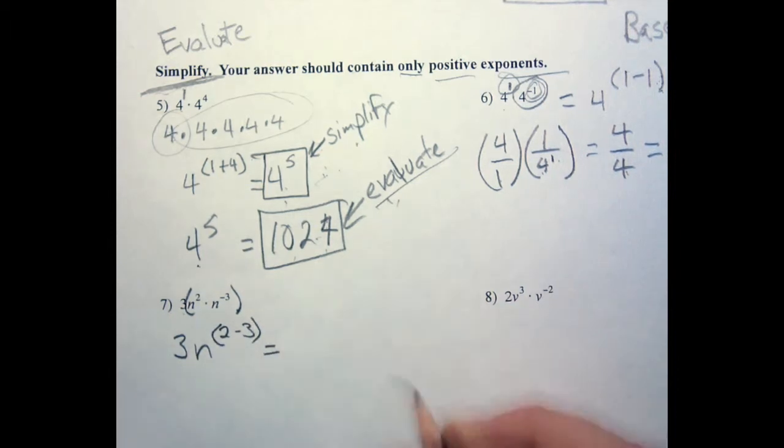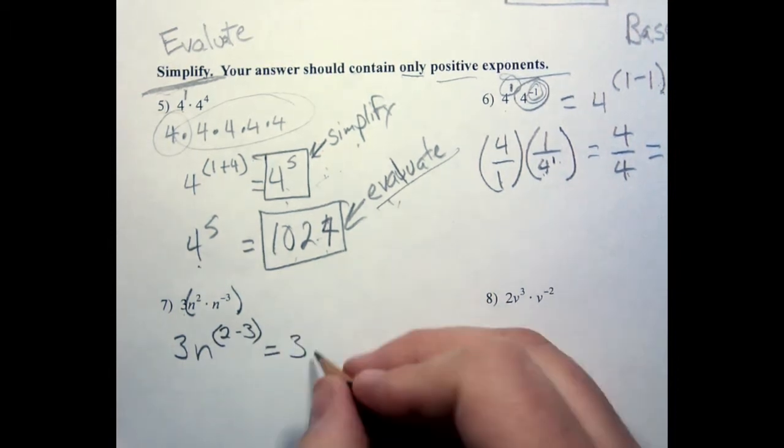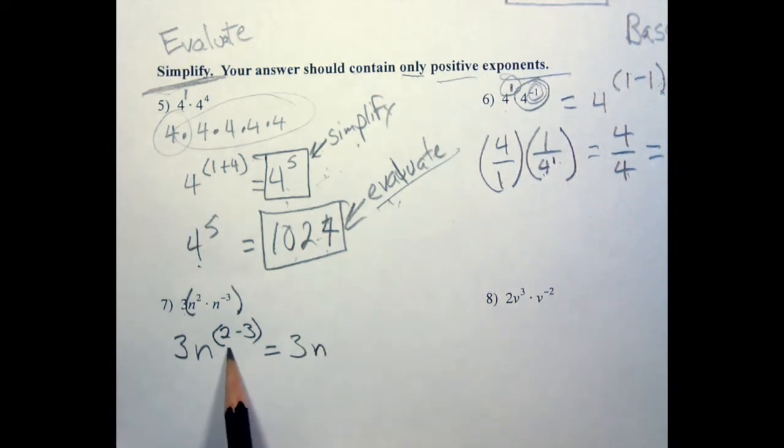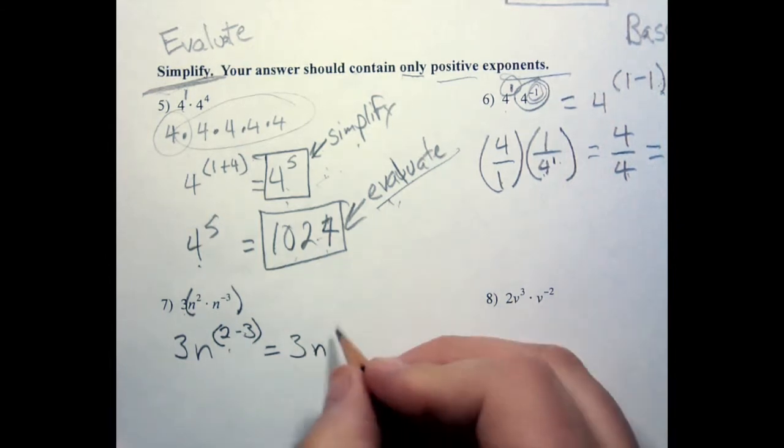So now if I want, the 3 doesn't change, so I just say 3 times n, what is 2 minus 3? Negative 1.